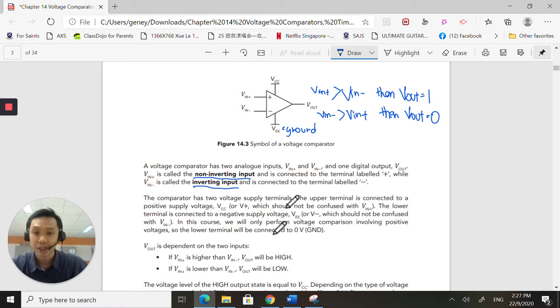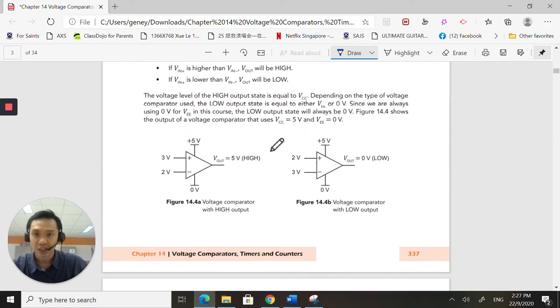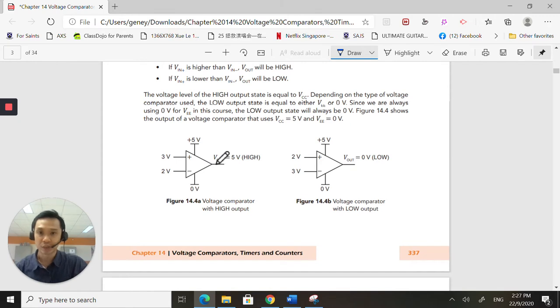So this is the basic principle on how it works. Remember, V in, the non-inverting greater than the inverting, the output will be high. If the inverting is greater than the non-inverting, output will be low. Remember this working principle. What I described is exactly here. If 3 volts at the non-inverting is greater than 2 volts at the inverting, output will be a high, and vice versa.